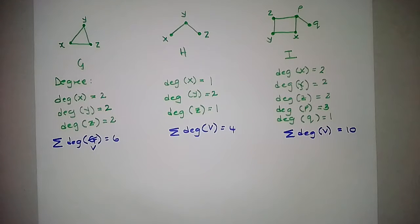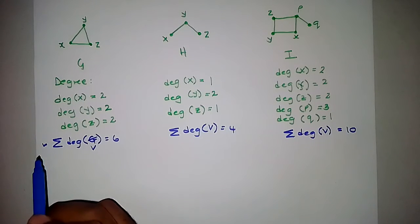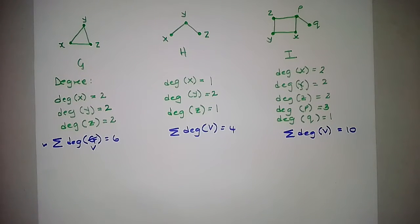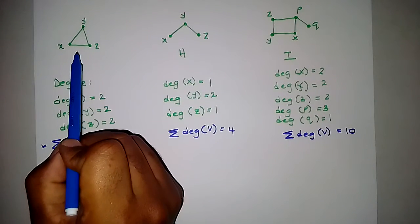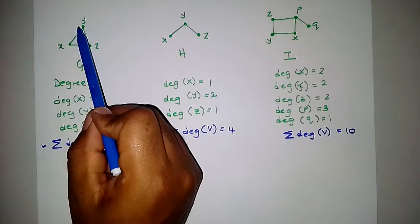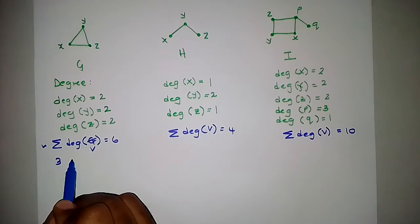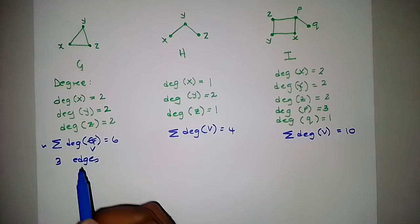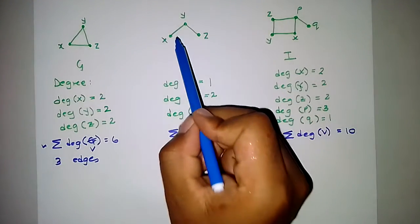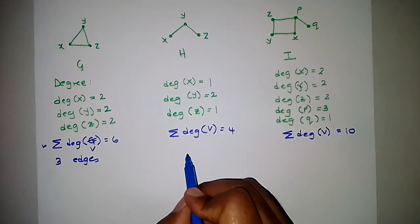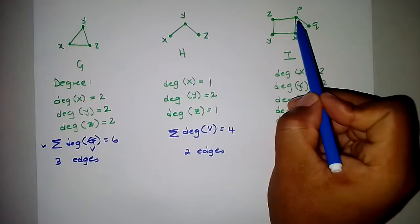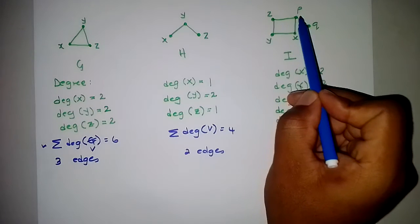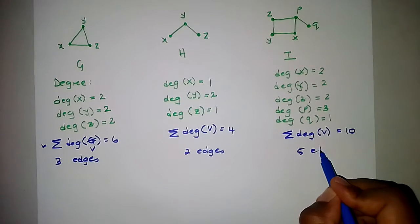We are summing the degrees of all the vertices. Now while we are on that, let us look at the number of edges each graph has. Graph G has 1, 2, 3 edges — 3 edges. Graph H has 1, 2 edges. Graph I has 1, 2, 3, 4, 5 edges — so 5 edges.